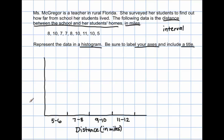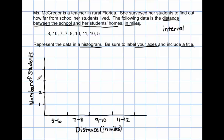This over here on the vertical axis is going to represent the number of students, because these numbers represent the distances of students' homes from school. On the vertical axis, I'm actually going to label the line itself, whereas on the horizontal axis I label between the lines. I'm going to label one student, two students, three students, four students, and if there are more I can keep going.